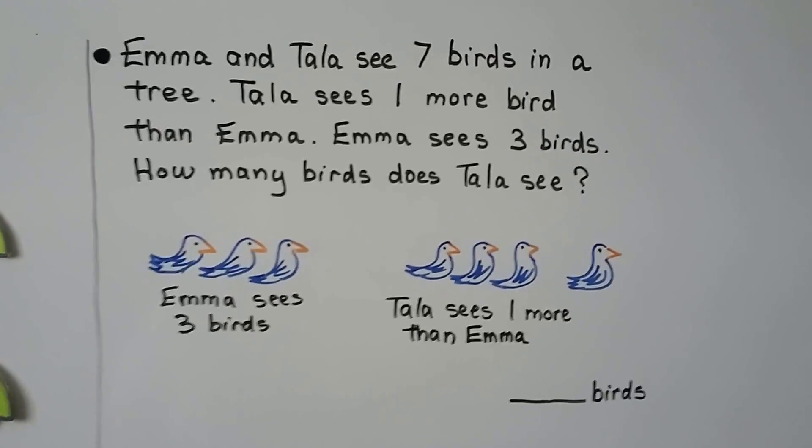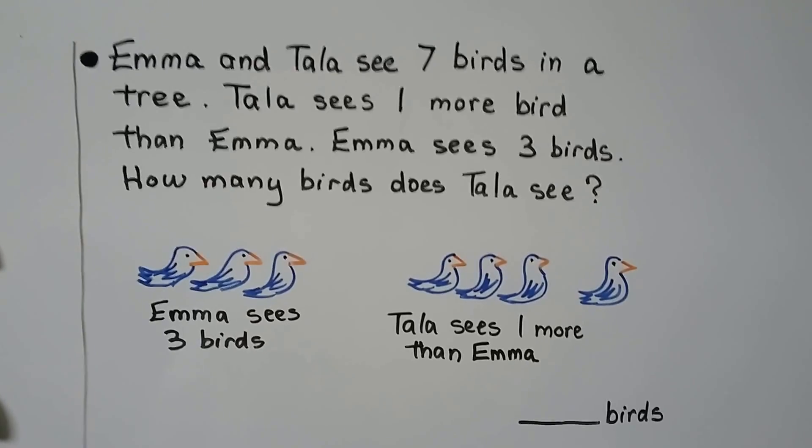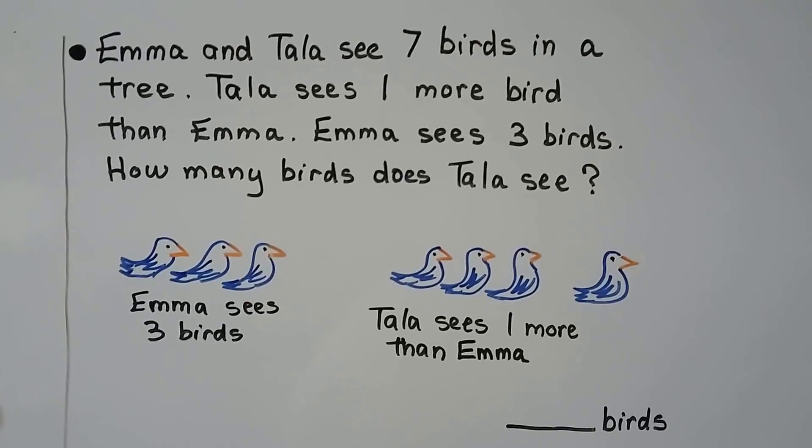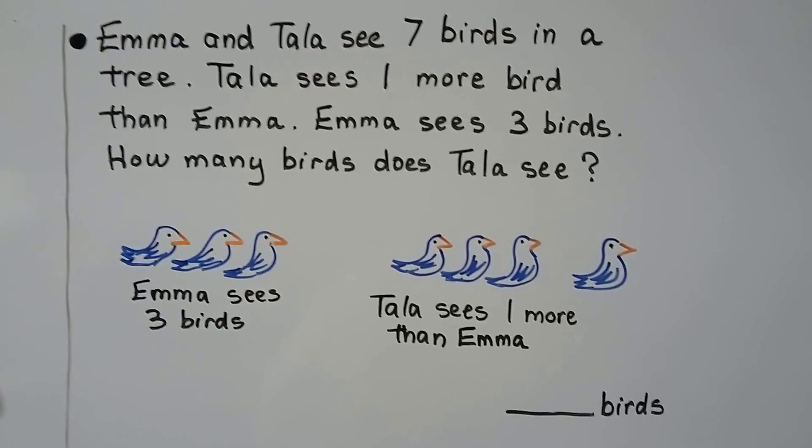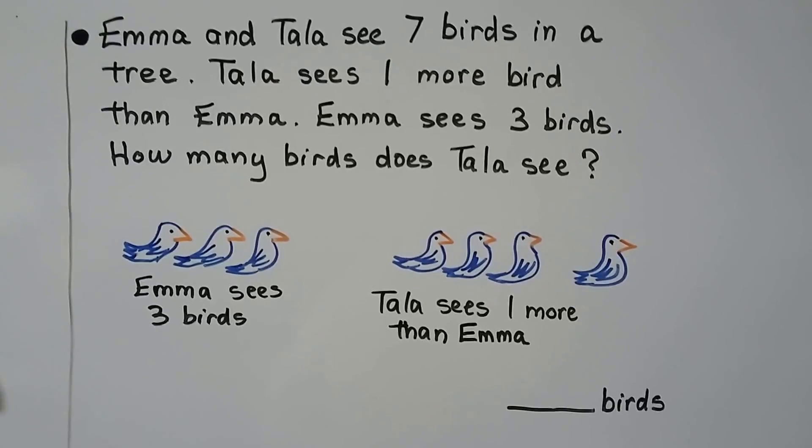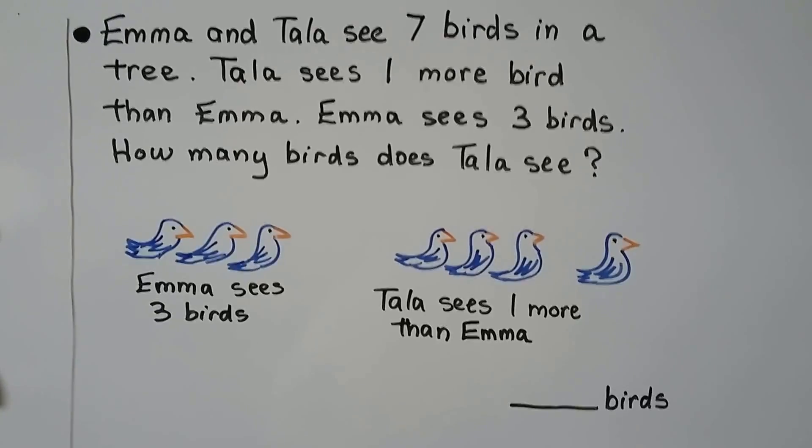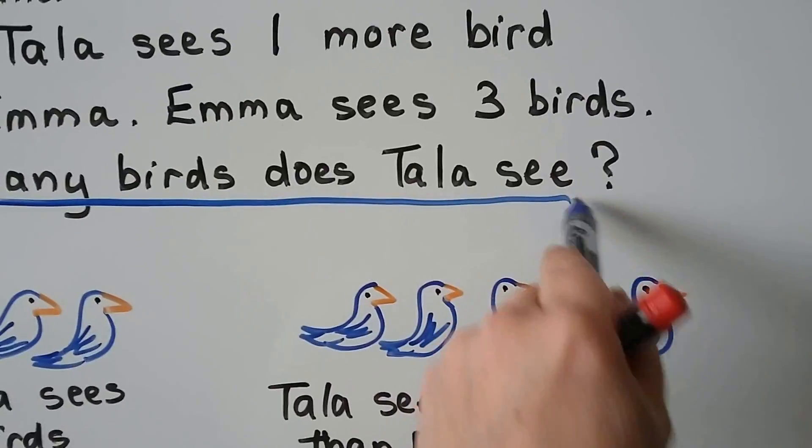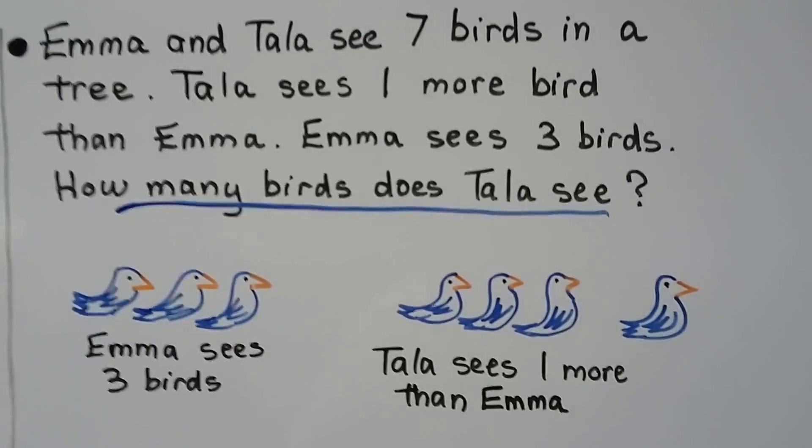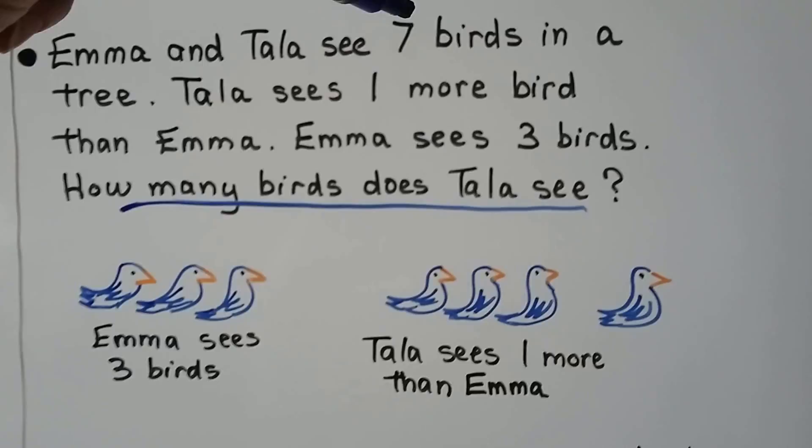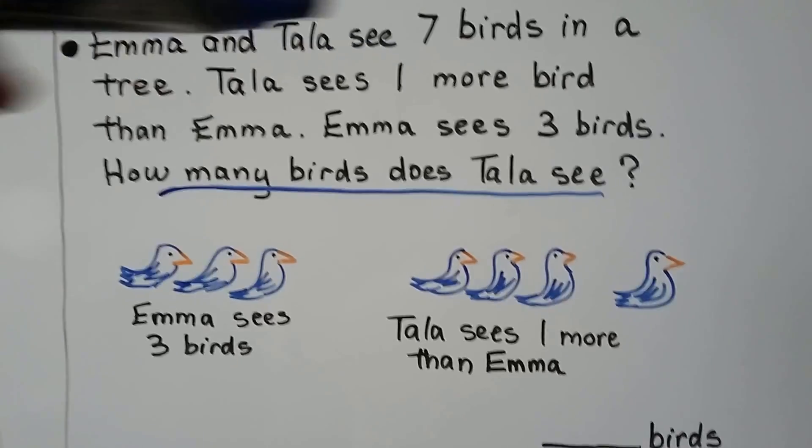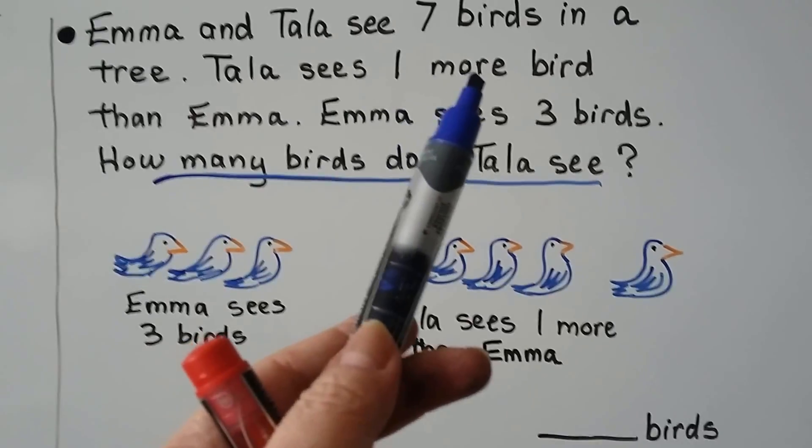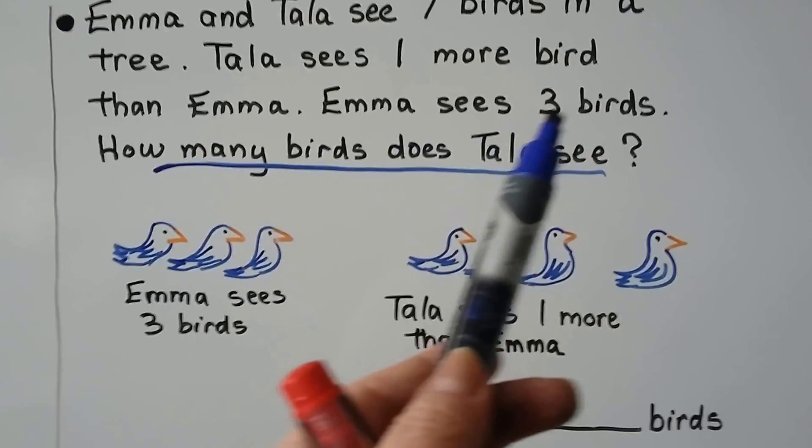Emma and Tala see seven birds in a tree. Tala sees one more bird than Emma. Emma sees three birds. How many birds does Tala see? So the first thing we do is we figure out what it's asking of us. It's asking us how many birds does Tala see? It says she sees one more bird than Emma and Emma sees three.